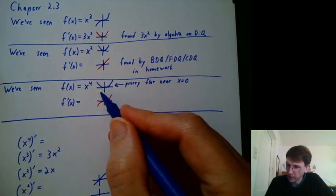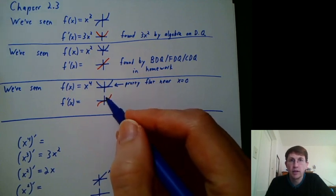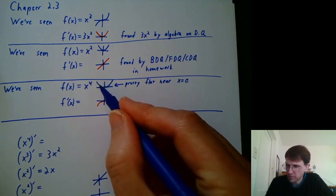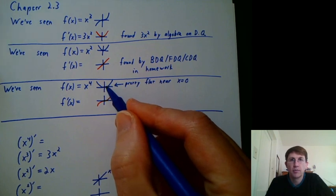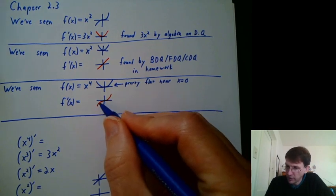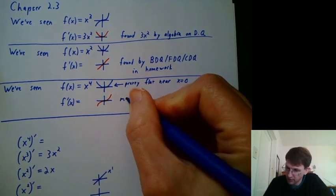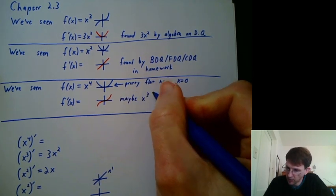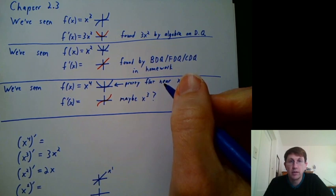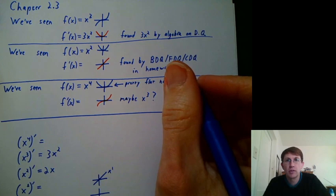In one of the worksheets for chapter 2.1, we were drawing derivatives, sketching them by hand. We started with a graph that looked like x to the fourth. It didn't really say what it was, but it was like a parabola but really flat near x equals zero, much more than most parabolas are. So that was actually x to the fourth. And when you sketch the derivative of that, you get something like this. What does that look like? Maybe x to the third. So that's a good question. Is it really x to the third? Well, we can use Desmos to help us find out. So let's switch to Desmos here.